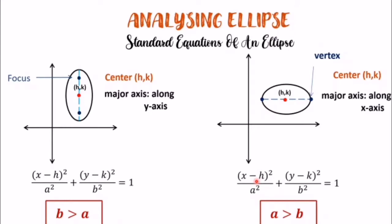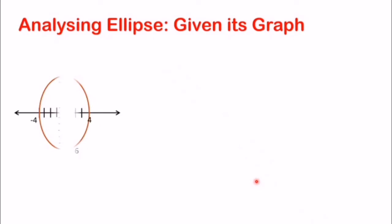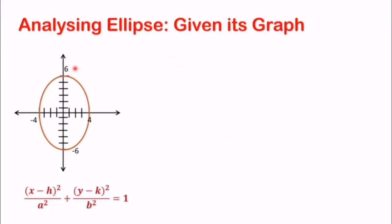Para mas maintindihan itong concept na to, magkaroon tayo ng two examples. Isa example is finding the standard equation and another example is finding the foci. So let us analyze ellipse given yung graph. So, eto yung graph natin — ang graph natin ay merong mga vertex na 4 units along the x-axis from the center, at 6 units naman siya from sa y. So ang gagamitin pa rin nating equation ay x minus h squared over a squared plus y minus k squared over b squared equals 1.